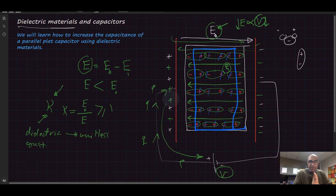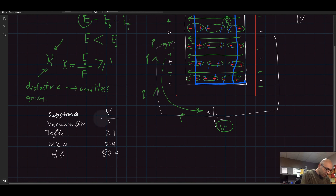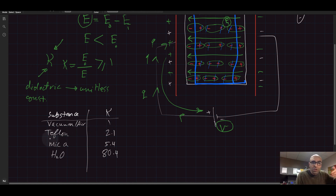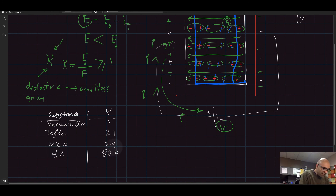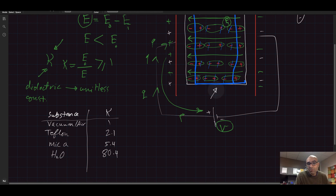Here is a quick table of some substances and their dielectric constants. For vacuum or air, kappa is 1 — that makes sense. Teflon, the material used on pots and pans to reduce food adhesion, is 2.1. Mica is 5.4. H₂O is 80.4 — water is a very good dielectric material, but of course you can't put water in electrical instruments. There are many more materials with varying dielectric constants.